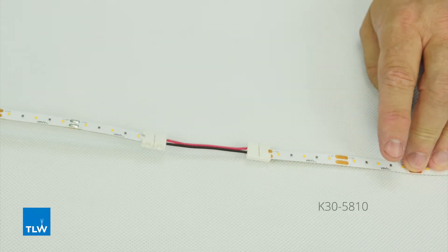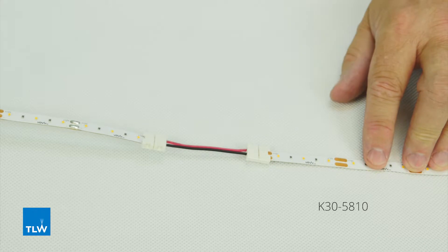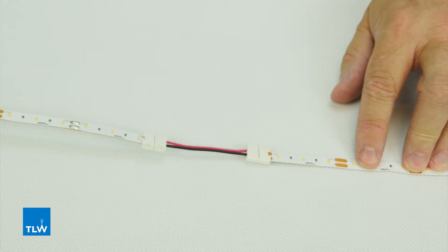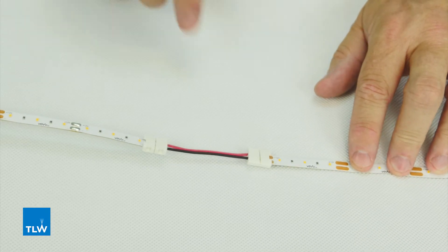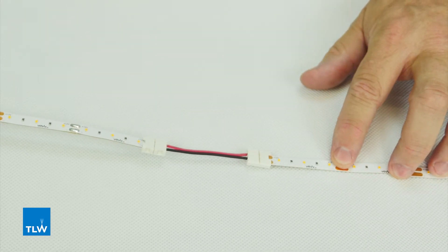This is a K30-5810 50mm corner connector. It's used to bring tapes around corners and worktops, and as you can see, it connects in exactly the same way as the driver connection lead.